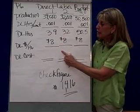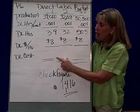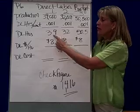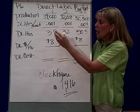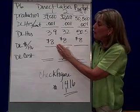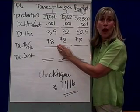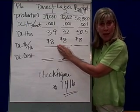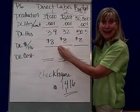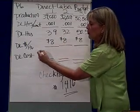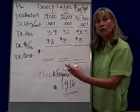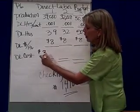Now what we have to do is figure out the direct labor cost. I'd take the direct labor hours and multiply it by what do I pay the guys an hour. The direct labor cost per hour is $8 an hour. So 39 hours times $8 an hour means my direct labor cost for making these bottles of water in the first quarter would be $312.